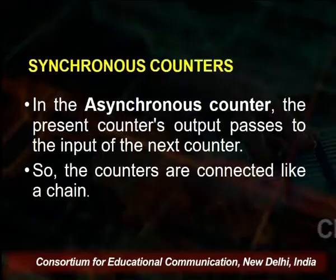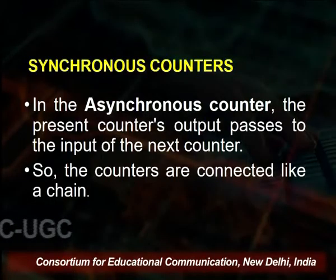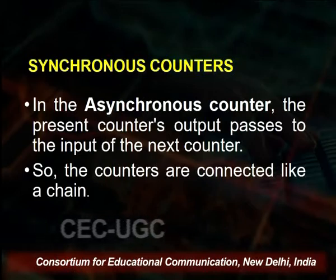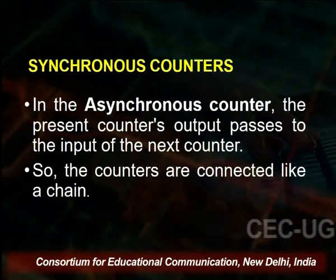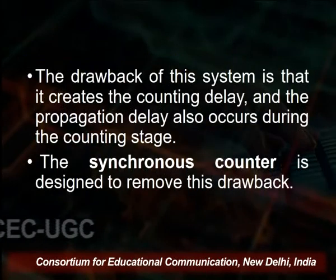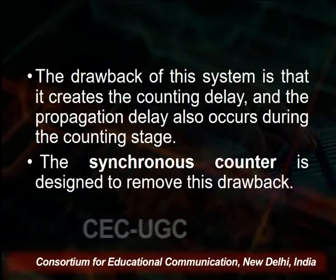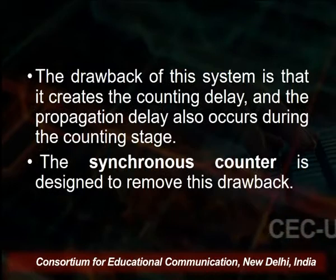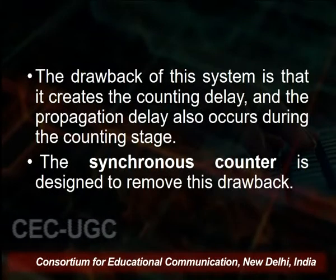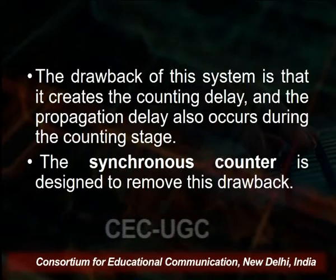In the asynchronous counter, the present counter's output passes to the input of the next counter — the counters are connected like a chain. This has a drawback: it creates counting delay and propagation delay, because we do not know when the pulse is coming. A synchronous counter is designed to remove this drawback.